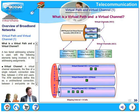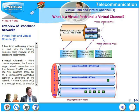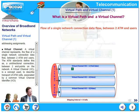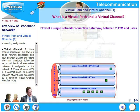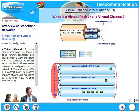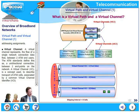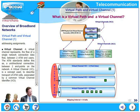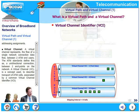A Virtual Channel represents the flow of a single network connection data flow between two ATM end users. The ATM standards define this as a unidirectional connection between two endpoints on the network. A Virtual Channel is a concept used to describe transport of ATM cells associated by a common Virtual Channel Identifier. Each Virtual Channel will have a Virtual Channel Identifier.